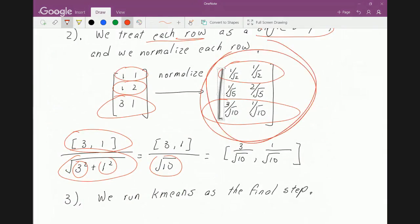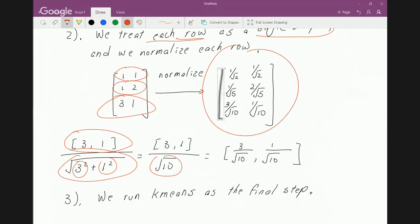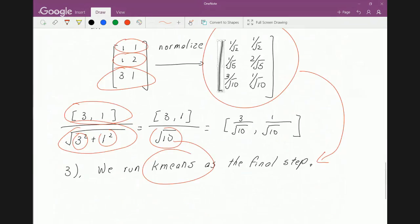once we have the normalized version of this, we run k-means. And this is how spectral clustering work when you are talking about with most people outside.